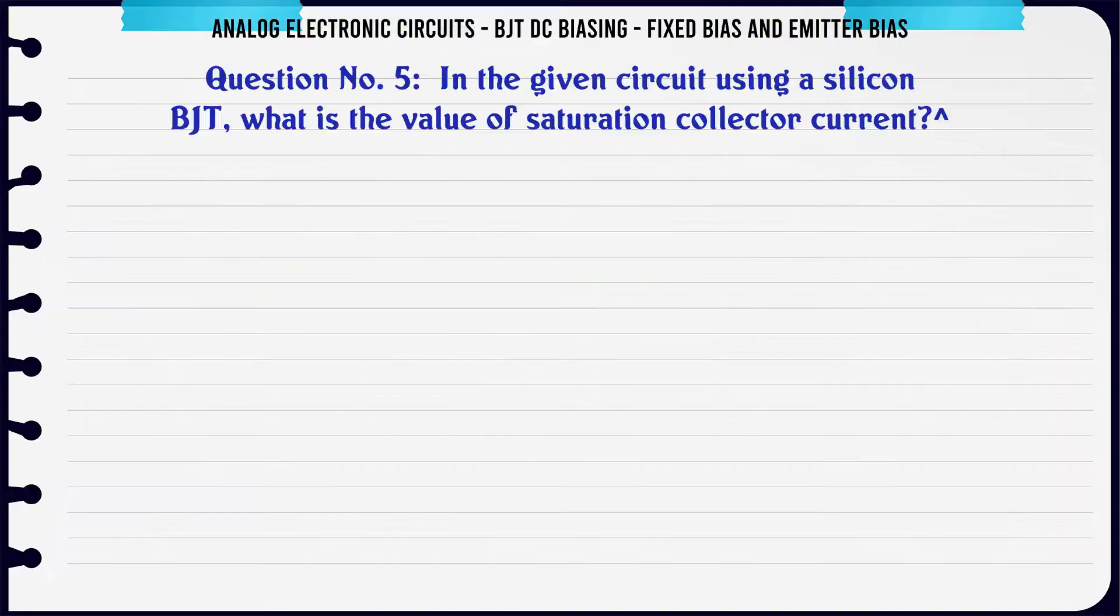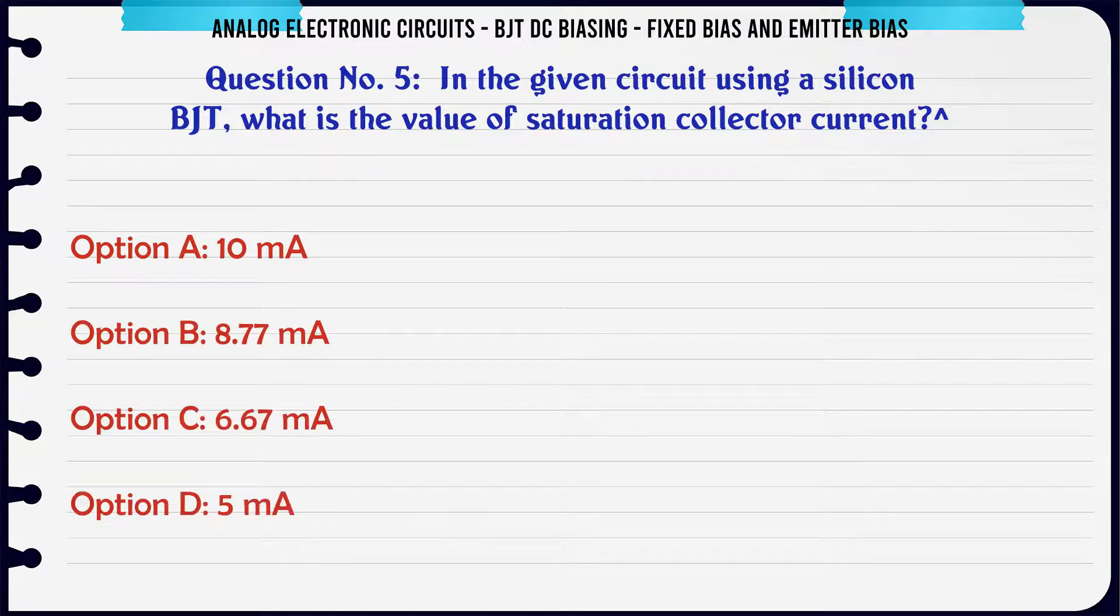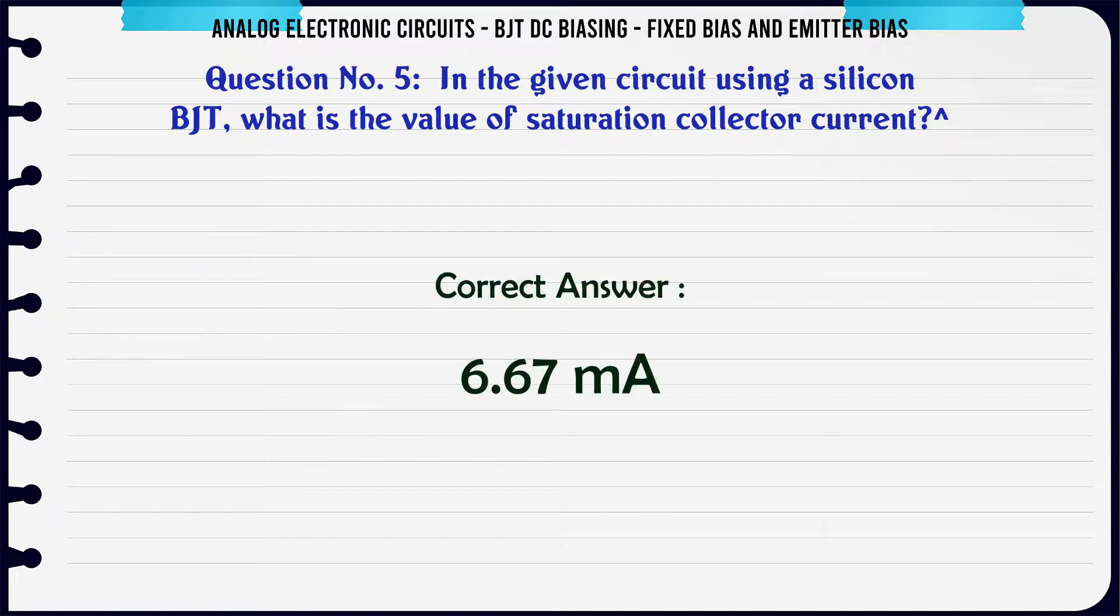In the given circuit using a silicon BJT, what is the value of saturation collector current? A: 10 mA. B: 8.77 mA. C: 6.67 mA. D: 5 mA. The correct answer is 6.67 mA.